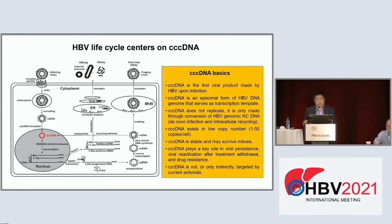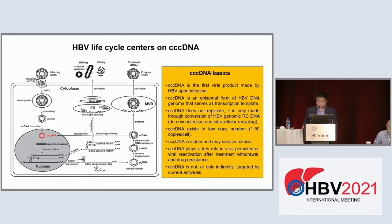cccDNA exists in relatively low copy numbers, from 1 to 50 copies per cell. It is very stable and may survive mitosis. It plays a key role in virus infection persistence, virus reactivation upon treatment withdrawal, and is also responsible for generating mutant virus upon development of drug resistance.